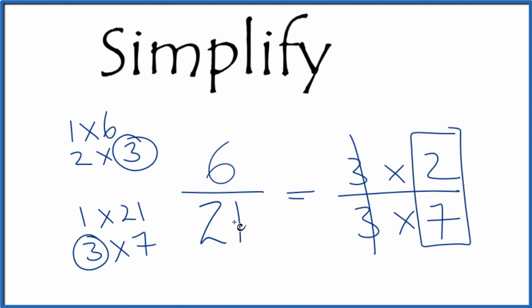And note, if you divide 6 by 21 and 2 by 7, you'll get the same answer. They're equivalent fractions. It's just that we reduced 6 21sts down to 2 7ths.